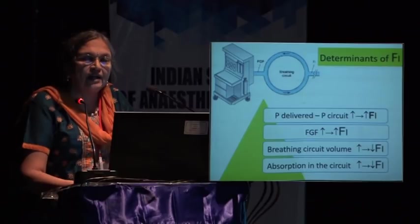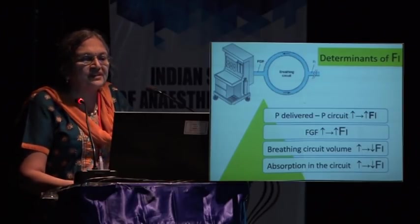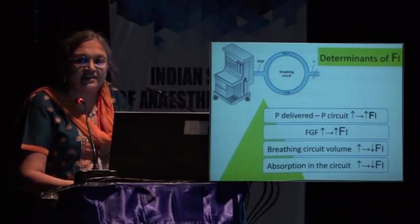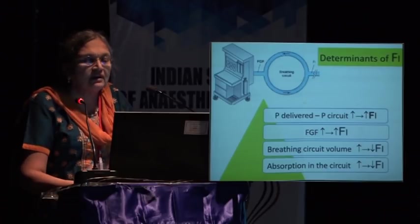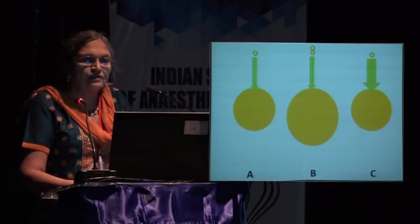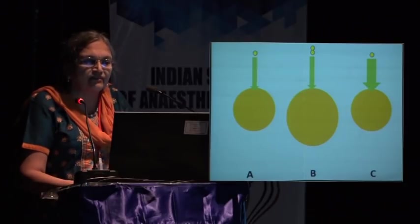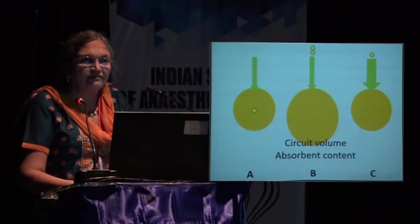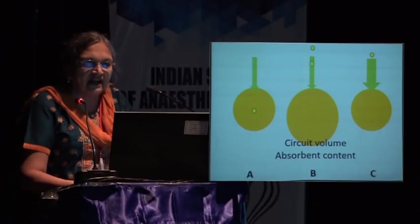What determines the inspired concentration (FI)? If the difference between delivered pressure and circuit pressure is greater, inspired concentration will be high. Increasing fresh gas flow increases inspired concentration. Increasing breathing circuit volume reduces it, and having more absorbent in the circuit also reduces it. A diagram shows this: increasing circuit volume or using moist soda lime slows the build-up of FI. Higher fresh gas flow produces a faster rise in inspired concentration.